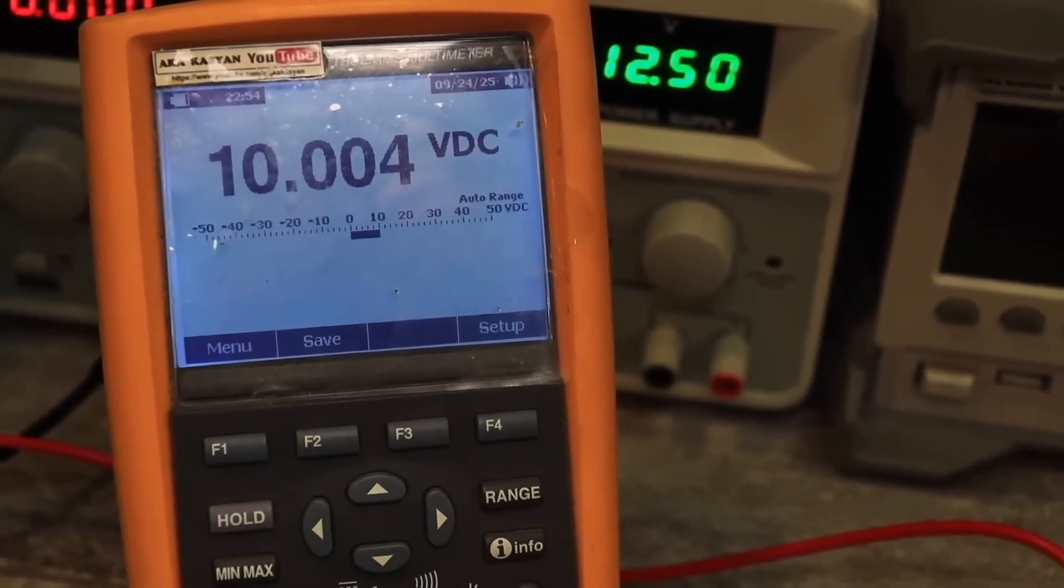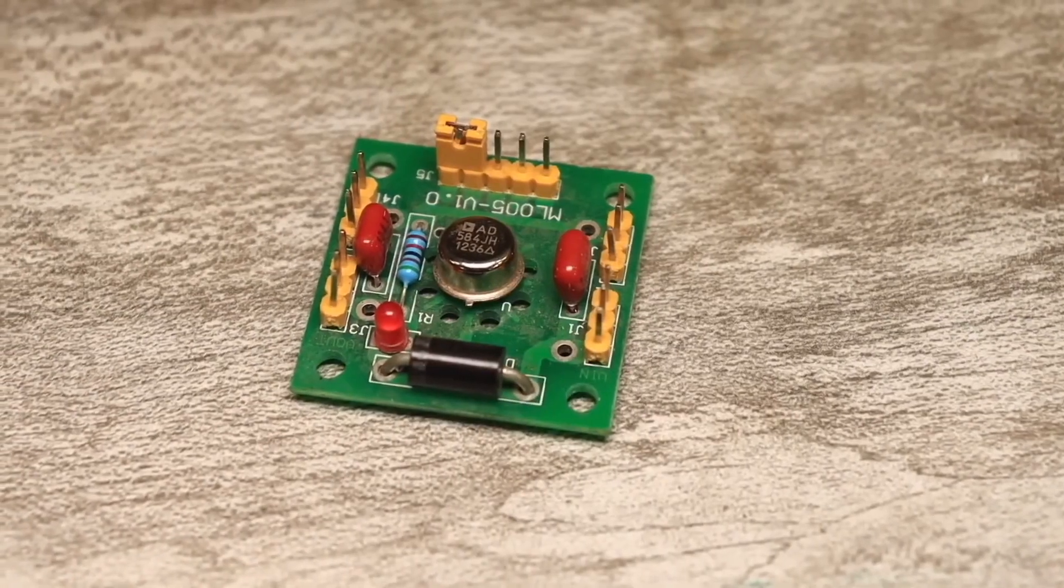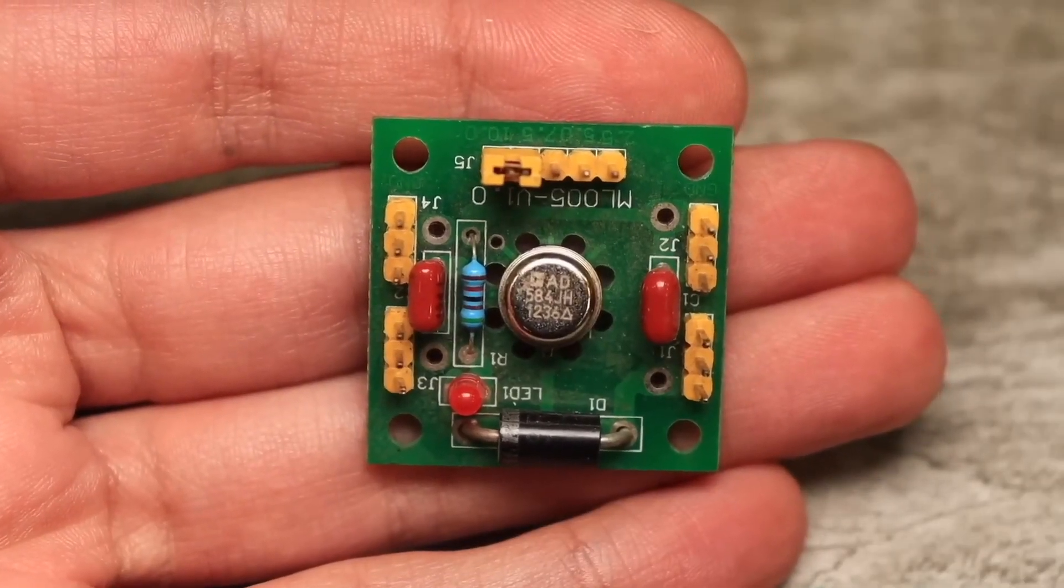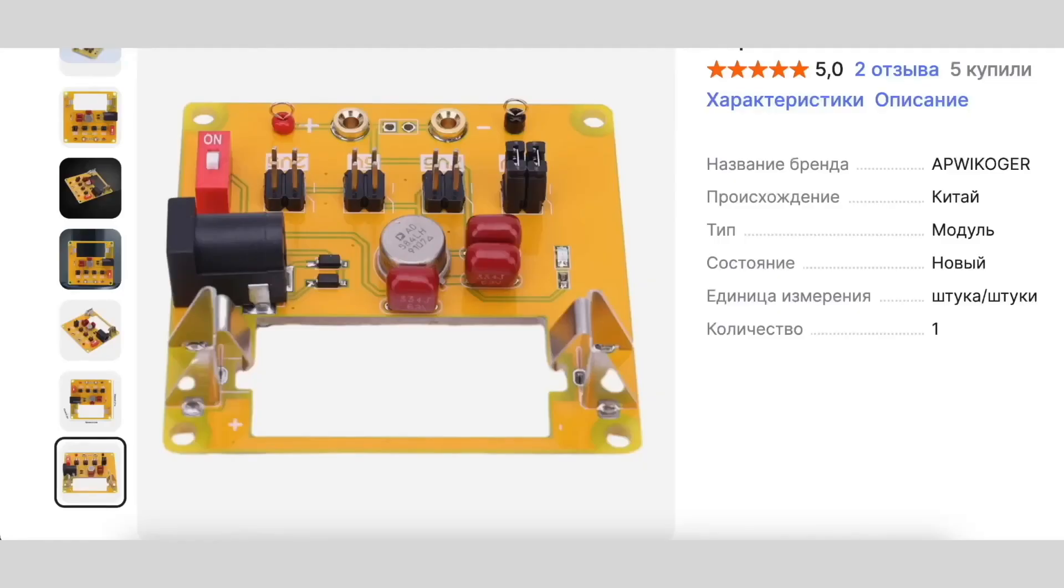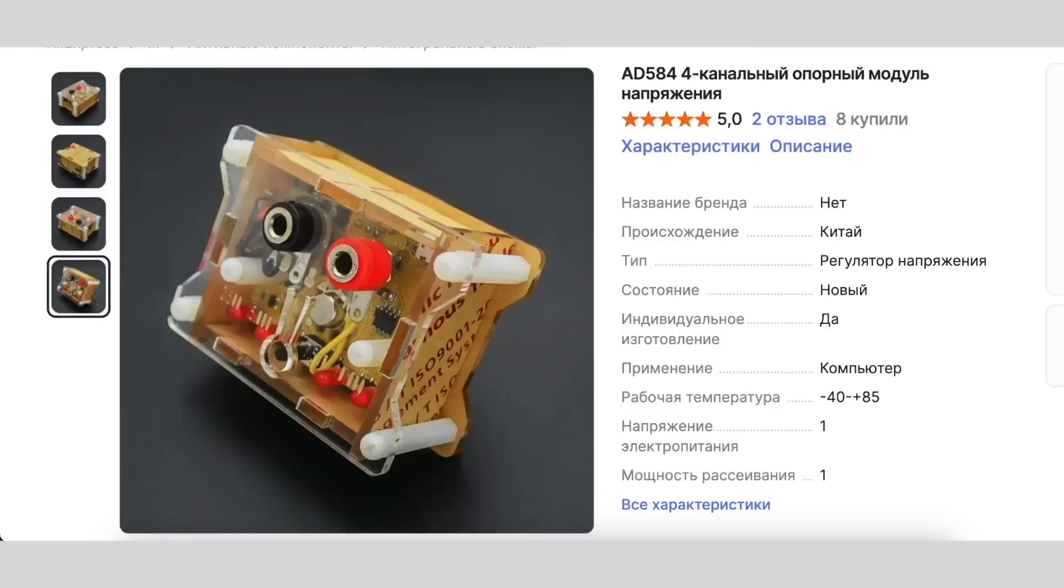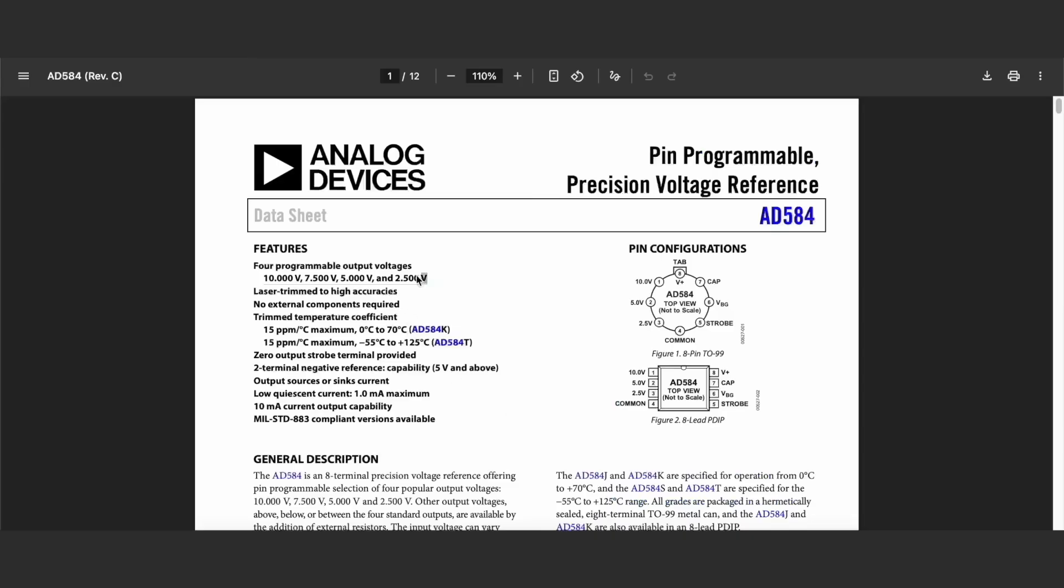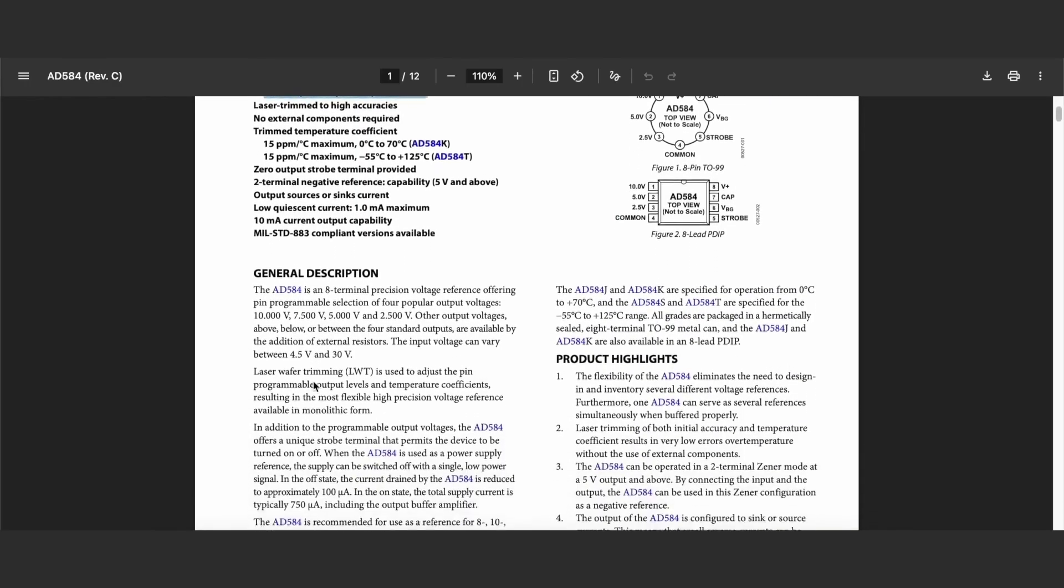What about voltage? The Chinese have some very popular modules based on the 8584 voltage reference. They can come in different versions: with a compartment for a 12-volt battery, with push-button voltage selection, and so on. The chip outputs four levels right away: two and a half volts, five volts, seven and a half volts, and 10 volts.